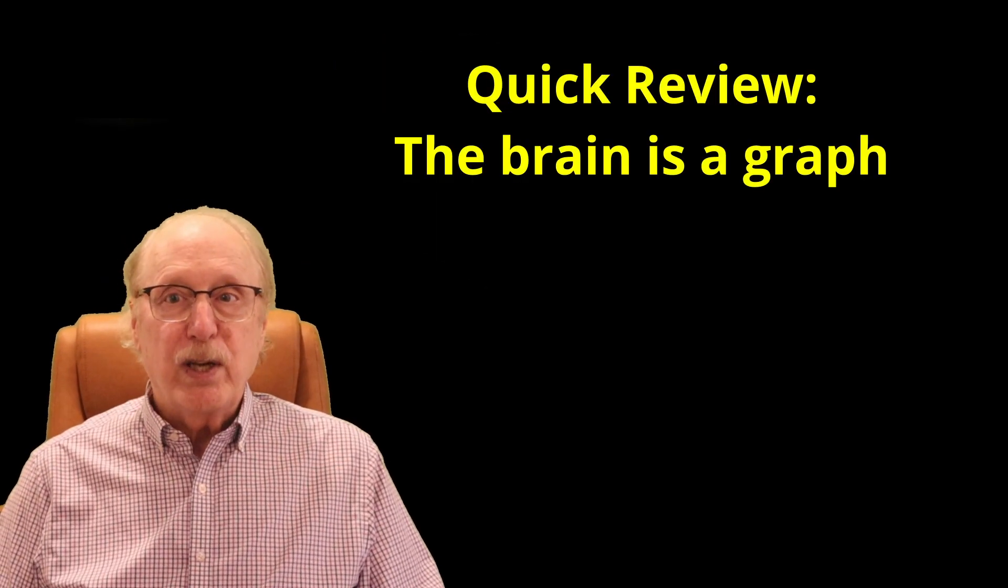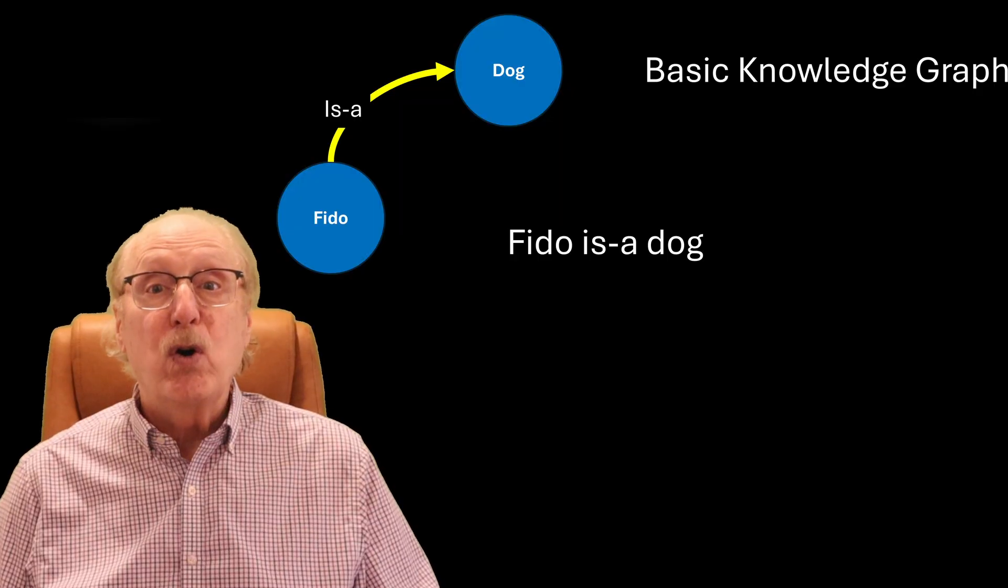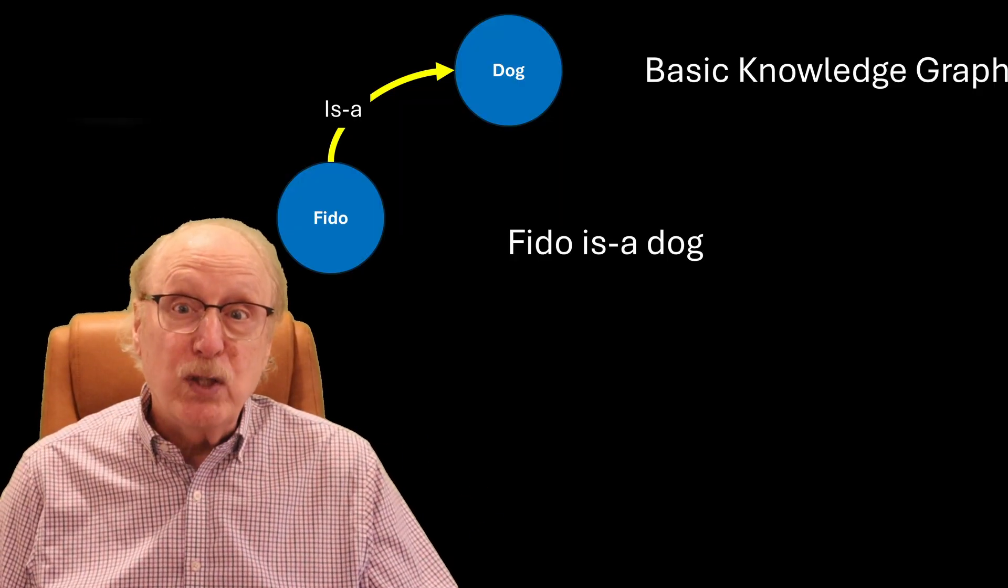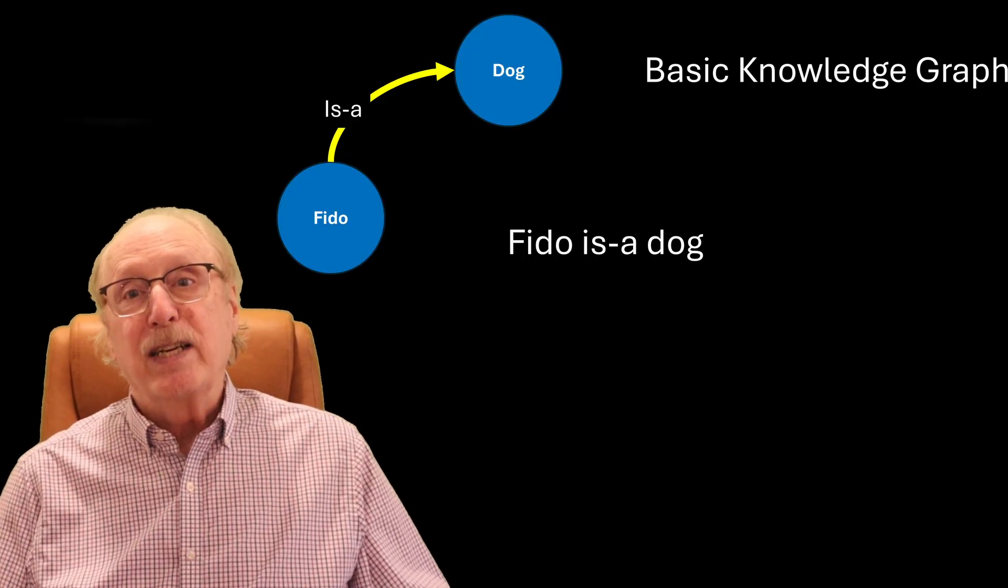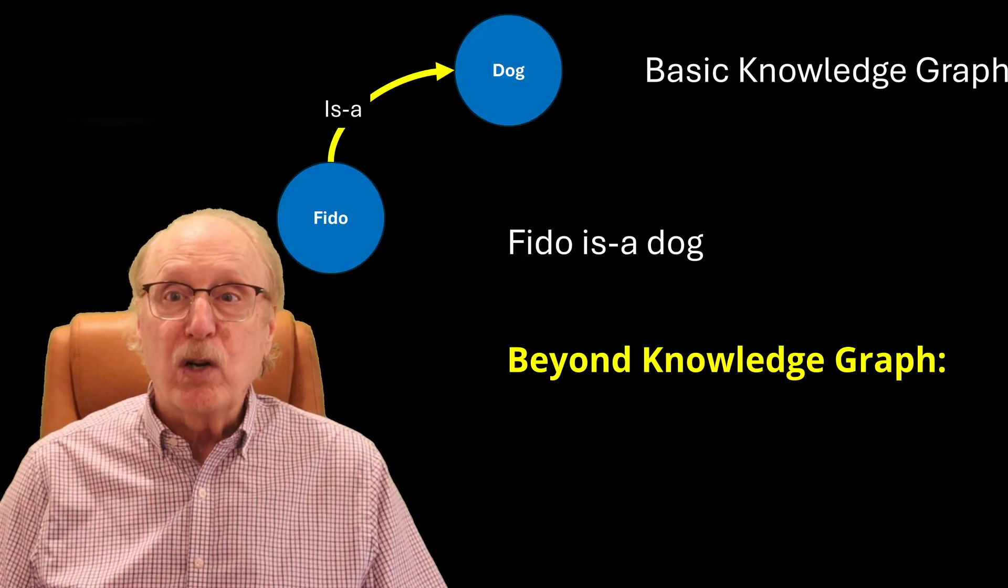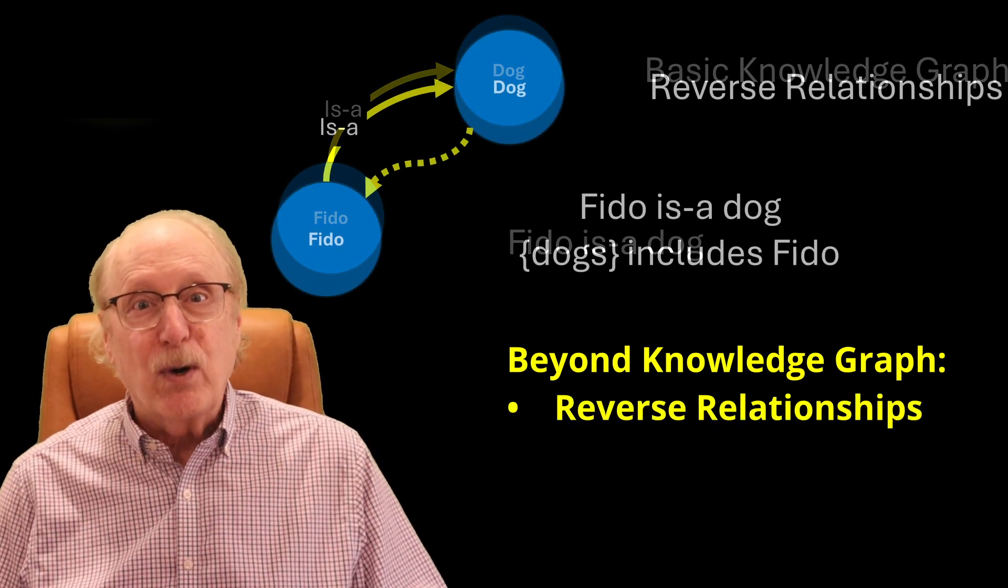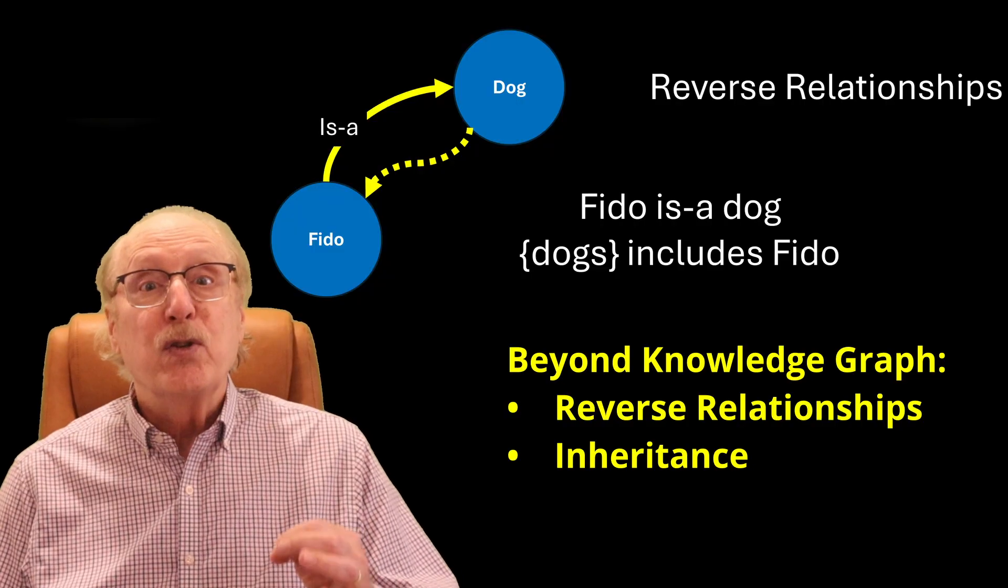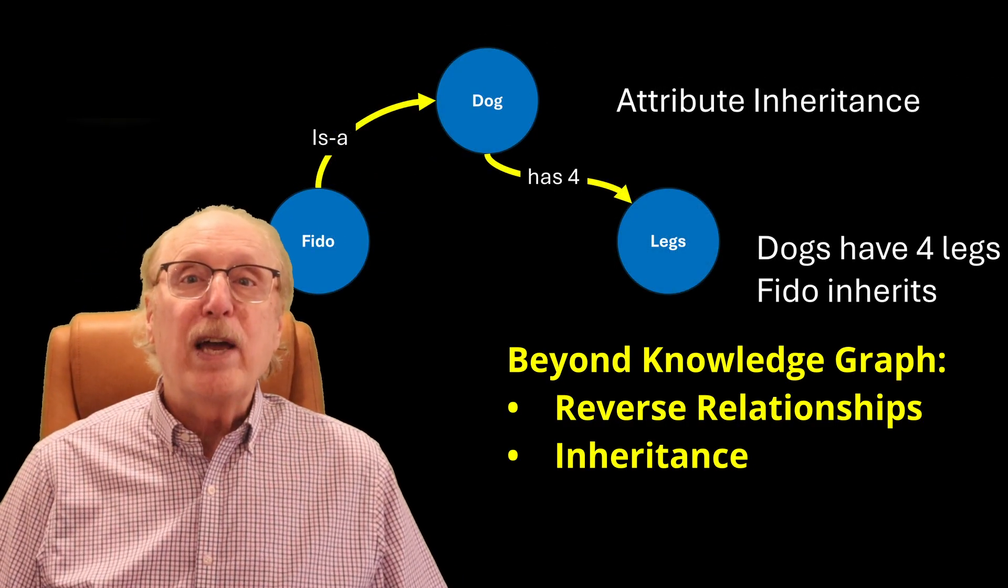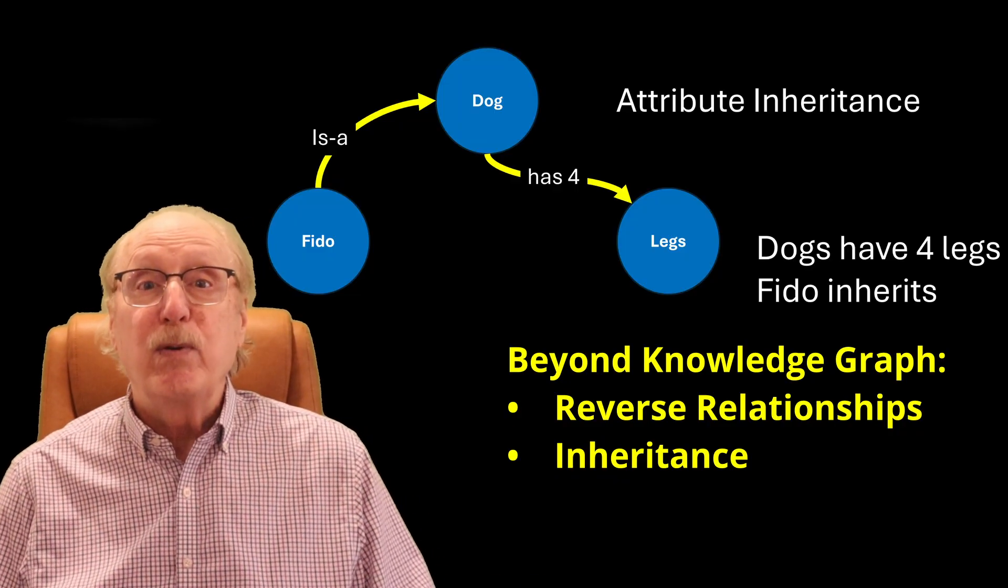In many of my videos, I've explained how the brain's information is organized as a graph of nodes connected by edges, so that the fact FIDO is a dog would be represented by two nodes and a single edge. By simply observing how our minds work, we quickly conclude that our brain's graph also supports reverse relationships and inheritance, so that when we learn that dogs have four legs, we also know that FIDO has four legs because he inherits that attribute from dog.